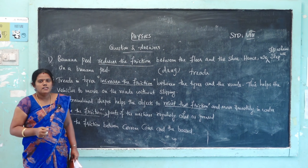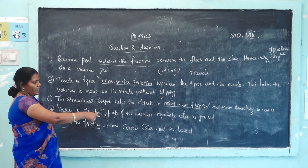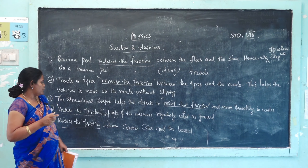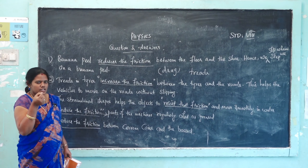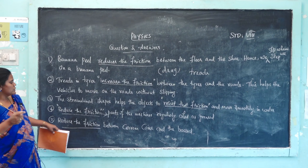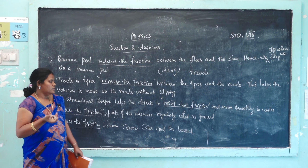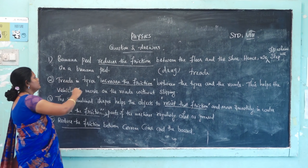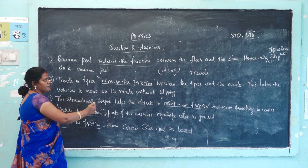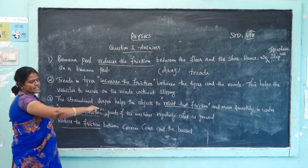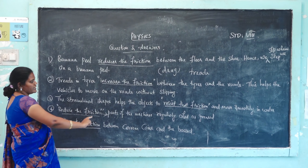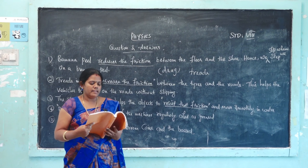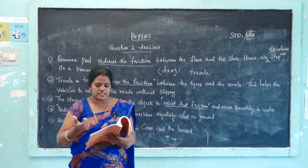Fifth: why do we sprinkle powder on a carom board? The powder reduces the friction between the carom board and the coin, allowing the coin to slide easily. In summary: banana peel reduces friction, tire treads increase friction, streamlined shapes resist friction, oil and grease reduce friction, and powder on the carom board reduces friction.